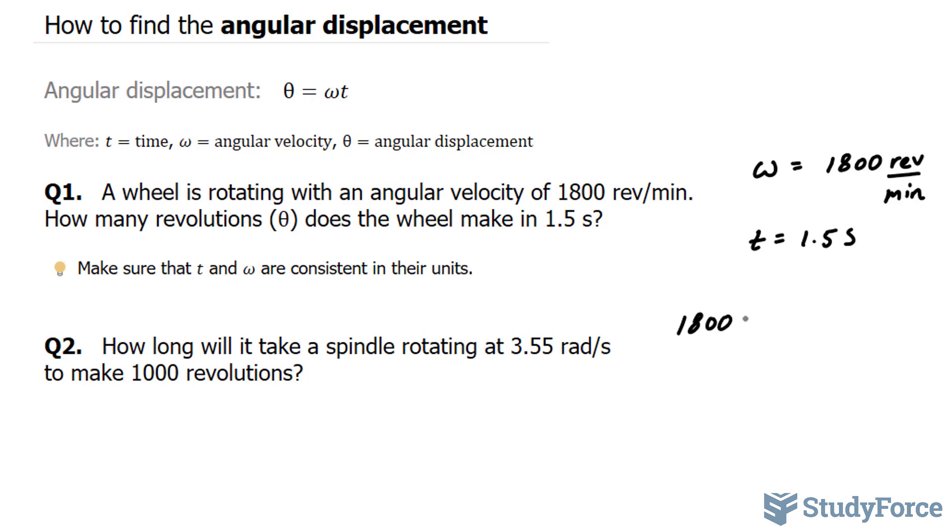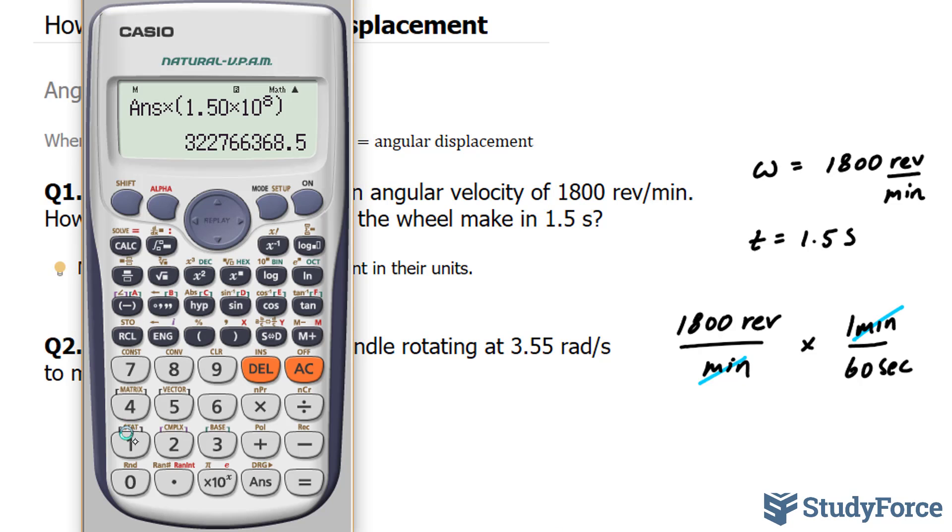We take 1800 and we multiply it by how many minutes are in a second. So if I multiply this by 1 minute over 60 seconds, what happens is the minutes units will cancel out and you're left with 1800 divided by 60 gives us 30.